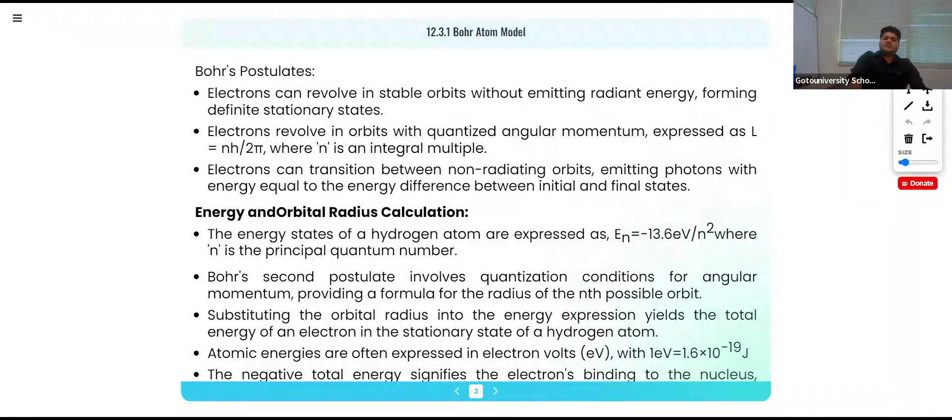Rutherford's model falls short in atomic structure. We have three postulates of Bohr. First postulate was electrons can revolve around the nucleus in stable orbits without emitting radiant energy, forming definite stationary states.